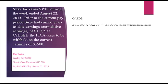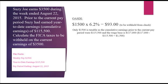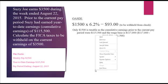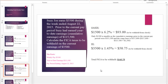For OASDI, we are going to take $1,500 multiplied by 6.2%, which equals $93 to be withheld from the employee paycheck. Why $1,500 and not $3,500? Only $1,500 is taxable because cumulative earnings prior to the current pay period were $115,500 and the wage base is $117,000, thus only $1,500 remains subject to OASDI tax.